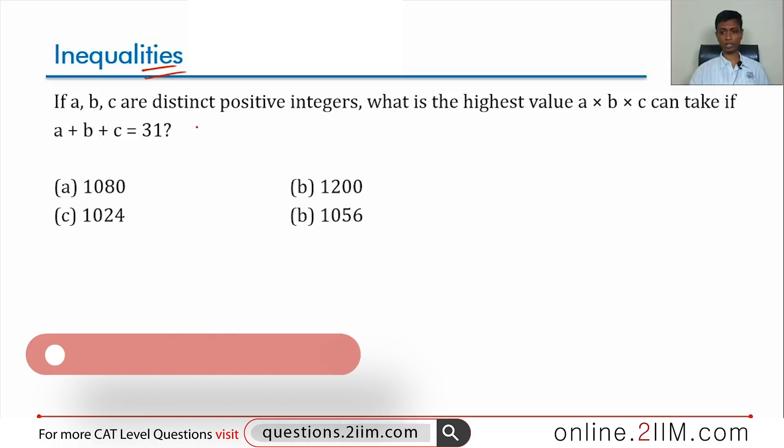If A, B, C are distinct positive integers, what is the highest value A times B times C can take if A plus B plus C is 31?